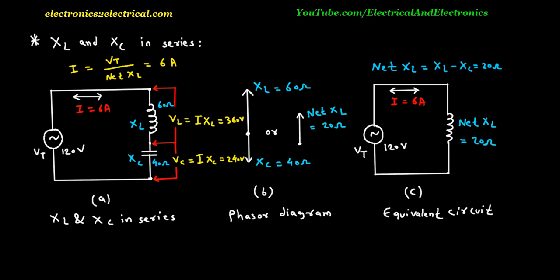The individual voltage drops are each greater than the applied voltage, but the sum of the series voltage drops equals 120 volts.